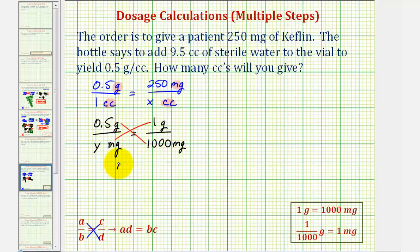Well, y times 1 is y. 0.5 times 1,000 is 500. And since y is equal to 500, 0.5 grams is equivalent to 500 milligrams.